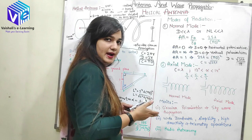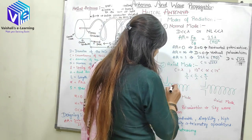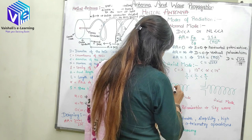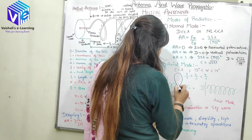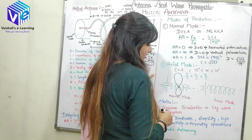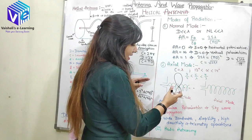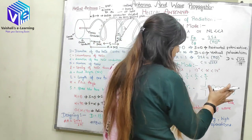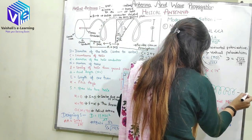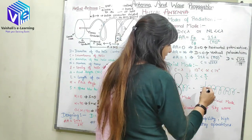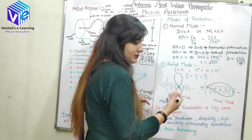Now we will see the radiation patterns for normal mode and axial mode. In normal mode, if this is the axis of the antenna, radiation is in the perpendicular direction — the upper half and lower half are equal, forming a toroidal pattern. In axial mode, the radiation pattern is in the direction of the axis of the antenna, forming an end-fire pattern.